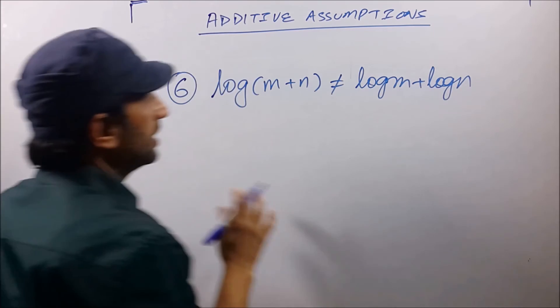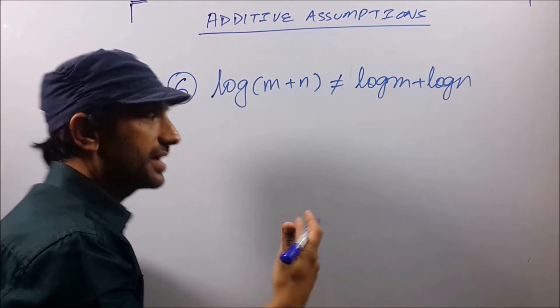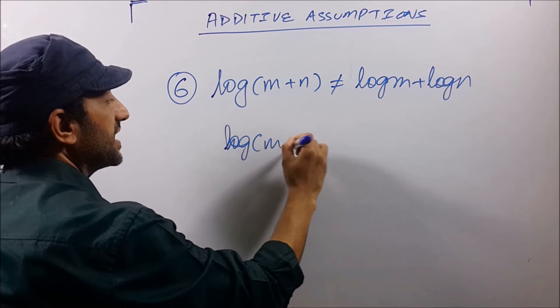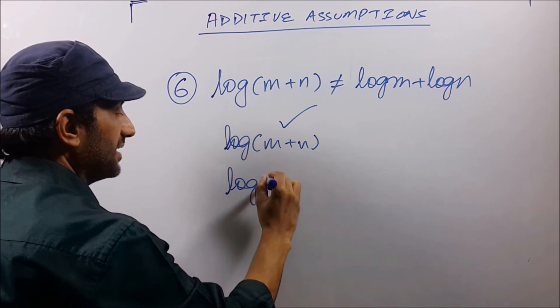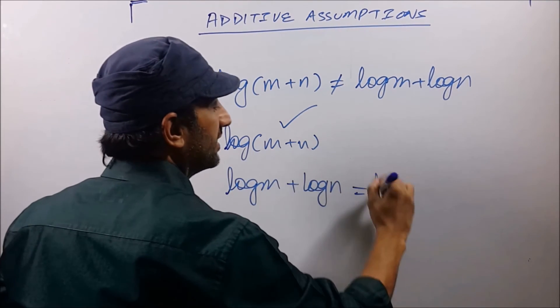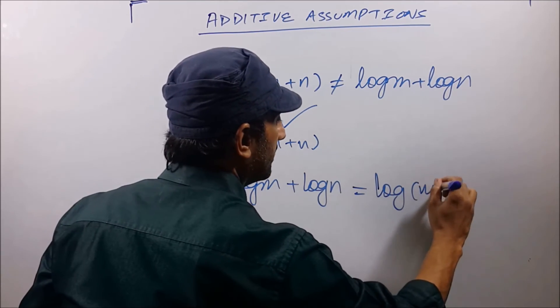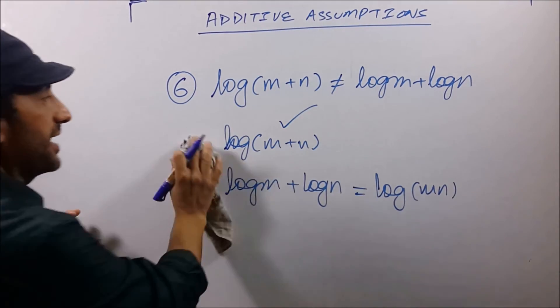Once again people open the bracket and they commit a bad mistake. So log(m+n) is a single term. This is as it is. Whereas log(m) + log(n) is a property. And yes, in this you can write log(mn). So no way log(m+n) is equal to log(m) + log(n).